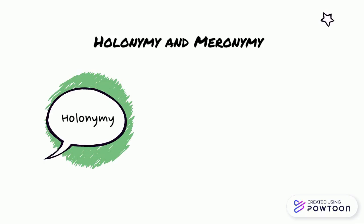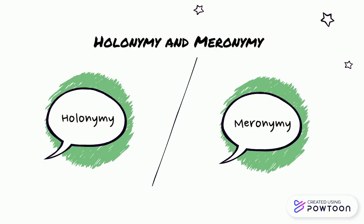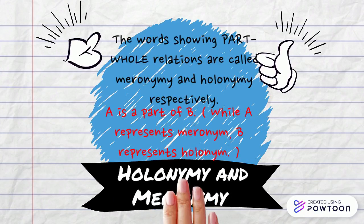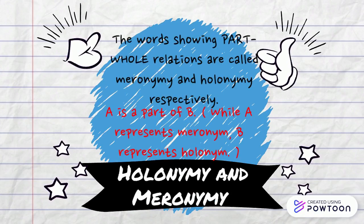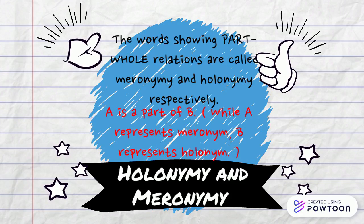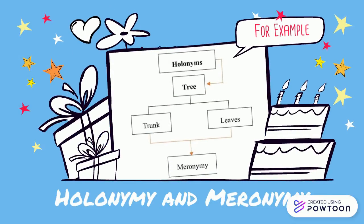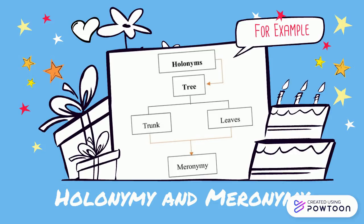The last pair is holonymy and meronymy. Words showing part-whole relations are called meronyms and holonyms respectively. So, in 'a is a part of b,' a represents the meronym and b represents the holonym. For example, the holonym is tree, and the meronyms are trunk and leaves.